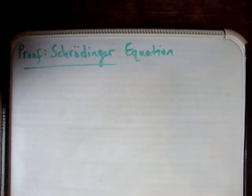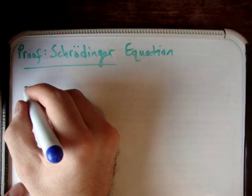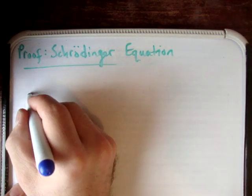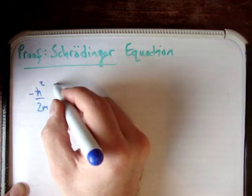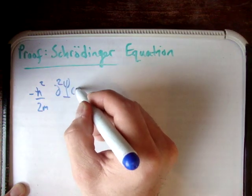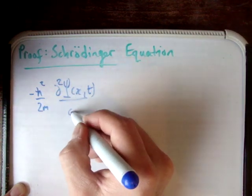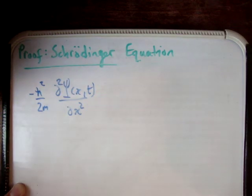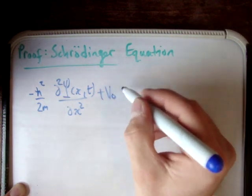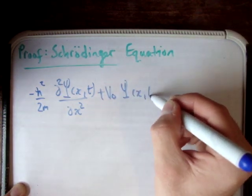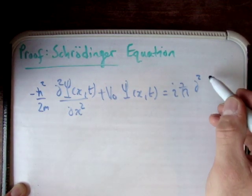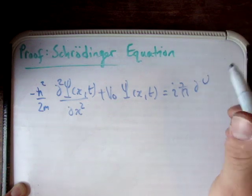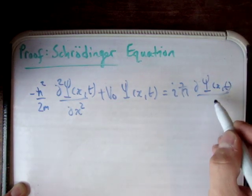There are a couple of things I'd like to talk about before I give you the proof of the Schrödinger equation. The first thing is I'd like to write it down. The Schrödinger equation looks something like this: minus h-bar squared over 2m times del² ψ(x,t) del x squared, plus V0 times ψ(x,t), is equal to iota times h-bar times del ψ(x,t) del t.